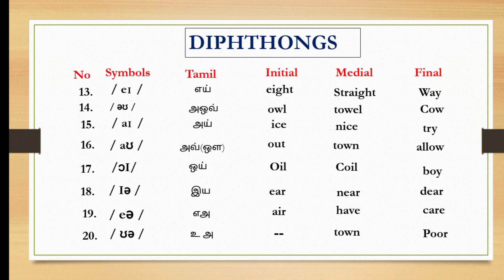Thirteenth one, aah, as in eight, straight, weigh. Fourteenth, aaw, as in owl, towel, cow. Fifteen, ai, as in eyes, nice, try.